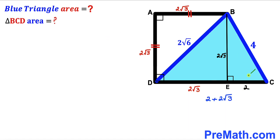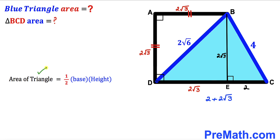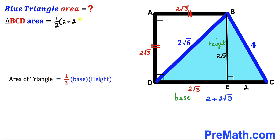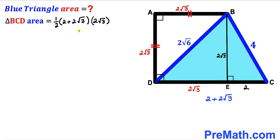For our final step, we calculate the area of the blue shaded triangle BCD using the formula: Area = ½ × base × height. The base of the triangle is CD = 2 + 2√3, and the height is BE = 2√3. So the area equals ½ × (2 + 2√3) × 2√3. The 2 and the ½ cancel, leaving √3 × (2 + 2√3).